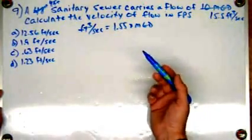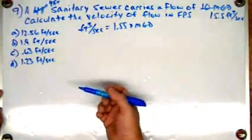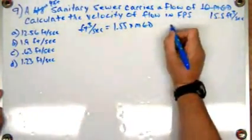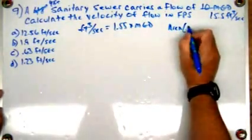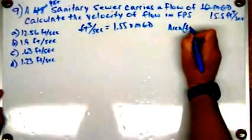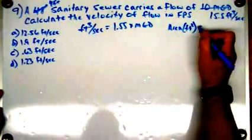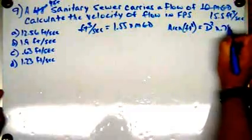So there's a couple of formulas we're going to need. Number one, we're going to need to get the area of that sewer and area, and this is going to be in feet squared equals diameter squared times 0.785.